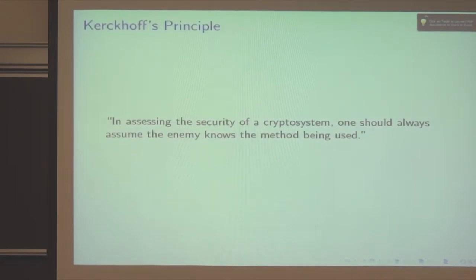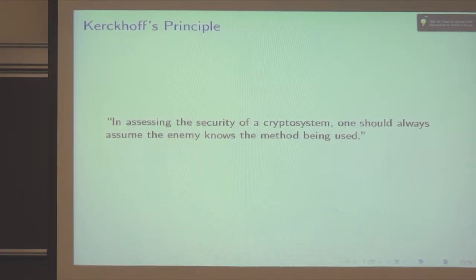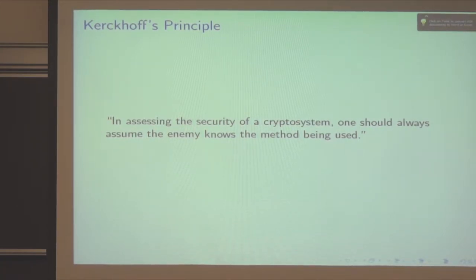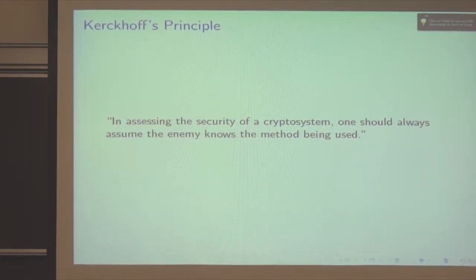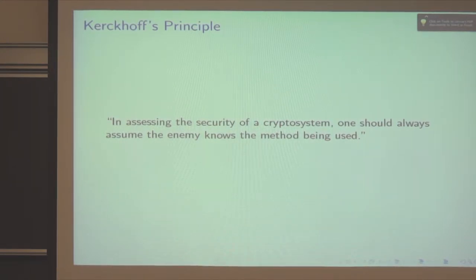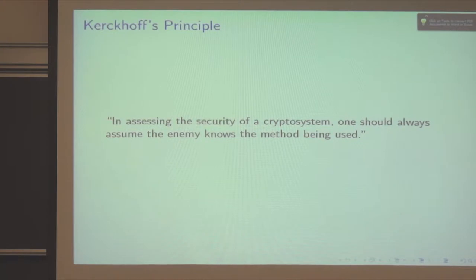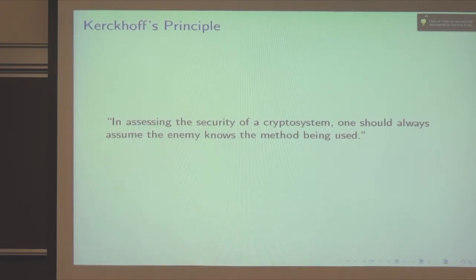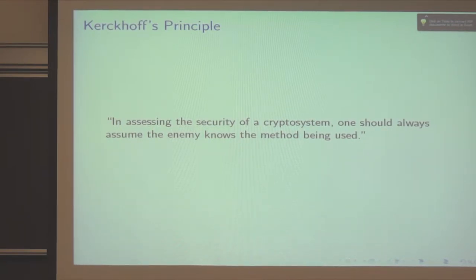Another important thing to remember is Kerckhoffs's principle: in assessing the security of a cryptosystem, one should always assume the enemy knows the method being used. Alice and Bob can't just use some obscure language that Eve can't read. They can't depend on Eve simply not being able to read the plaintext. It has to be encrypted because you have to assume Eve knows the language and can recognize the plaintext. So the security is entirely based on the encryption key.